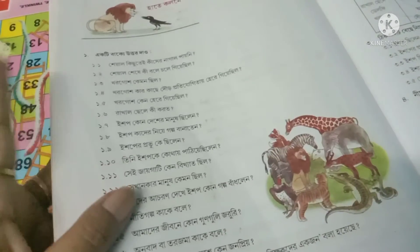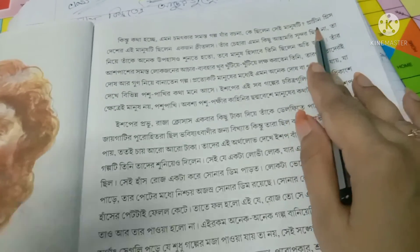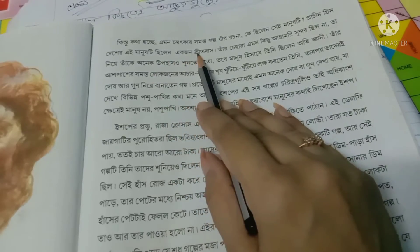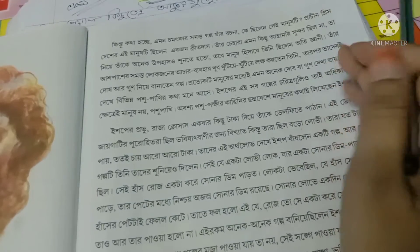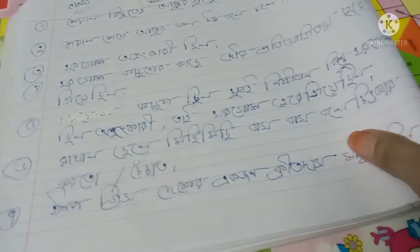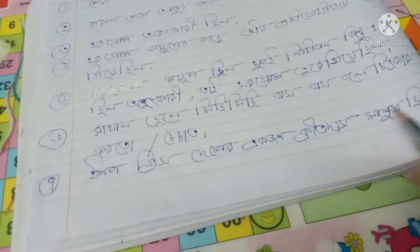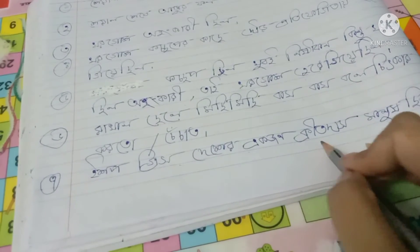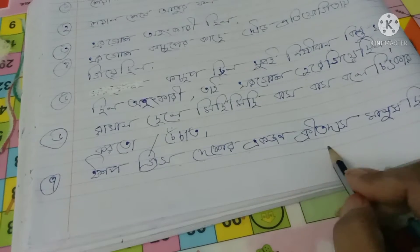Now ই সব কোন দেশের মানুষ ছিলেন? ই সব আমরা পড়েছি। দাখো কোন জায়গাটা পাচ্ছি? উত্তরটা দেখো — এখানটা পাচ্ছি। প্রাচীন দেখা যাচ্ছে ই দেখো — প্রাচীন গ্রিস দেশের এই মানুষ ছিলেন। একজন কৃতো — তার মানে এই মানুষটা কে না? ই সব তাহলে প্রাচীন গ্রিস দেশের, কিন্তু তিনি মানুষ ছিলেন। আমরা জানতে পারছি তাহলে উত্তরে আমরা কী লিখব? লিখব হচ্ছে — ই সব গ্রিস দেশের একজন কৃতো।